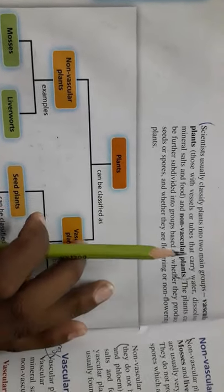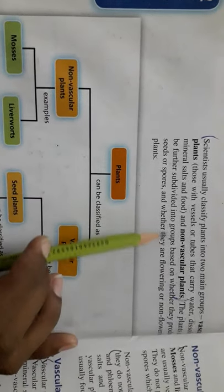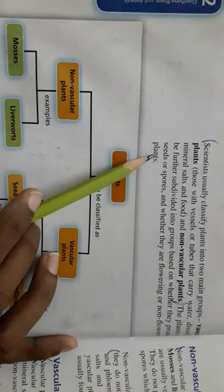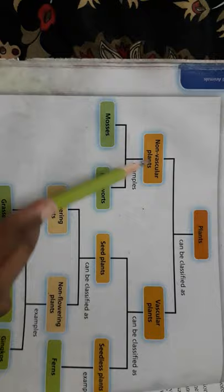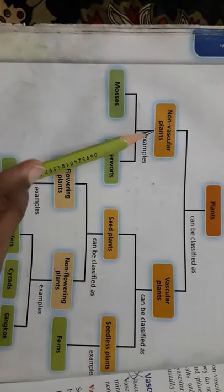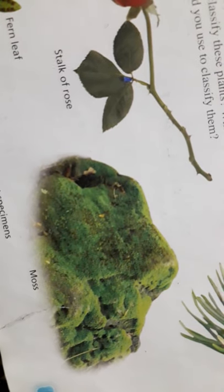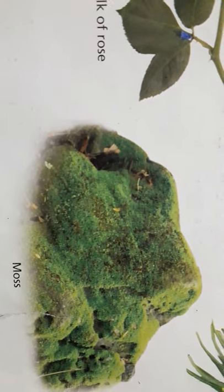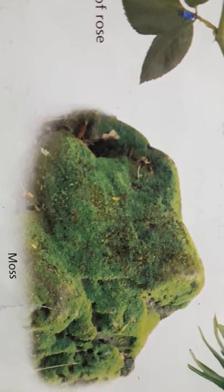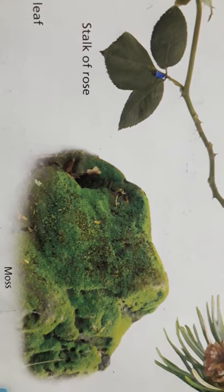Vascular and non-vascular plants can be further subdivided into groups based on whether they produce seeds or spores, and whether they are flowering or non-flowering. Non-vascular plants are very simple plants — they don't have stem, roots, or leaf-like structures. This flowchart will help you see how plants can be classified. Non-vascular plants are just a mass of cells — there is no differentiation of organs, no leaves, stem, or root-like structure. That mass of cells is called a thallus. These are examples of non-vascular plants.